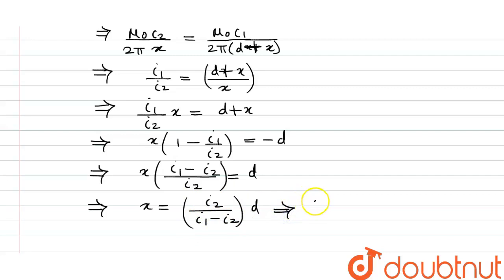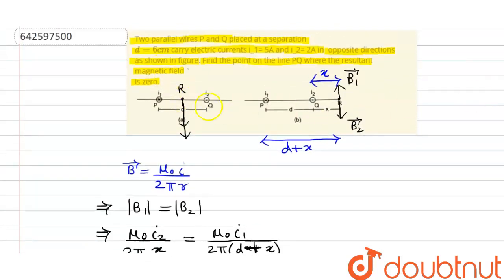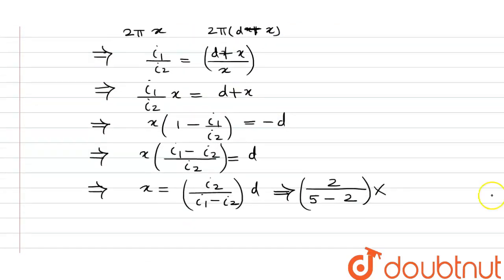So what is the value of i2? It is 2 ampere, divided by what is the value of i1? It is 5 ampere minus 2 ampere, multiplied by what is the value of d? It is given in the question, which is the separation between these two wires. It is 6 centimeter. So we can write it as 6 into 10 raised to minus 2. So after solving this, we will get our final answer. So our final answer will be 4 into 10 raised to minus 2 meter. So we can write it as 4 centimeter. This will be our final answer.